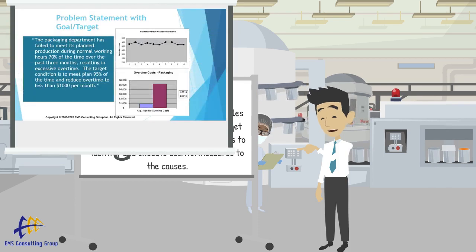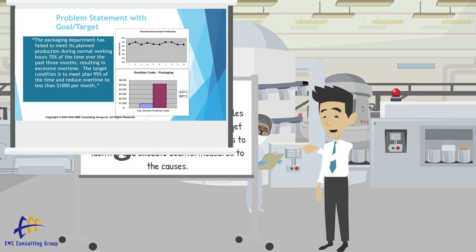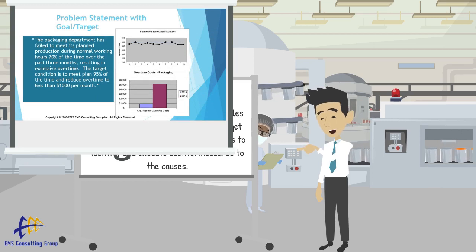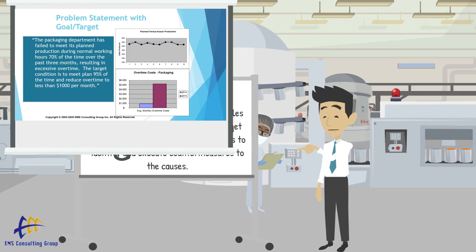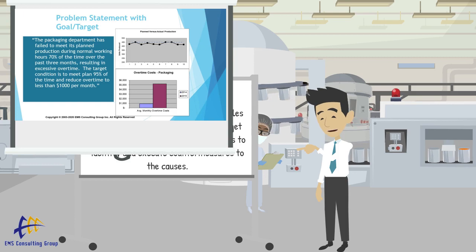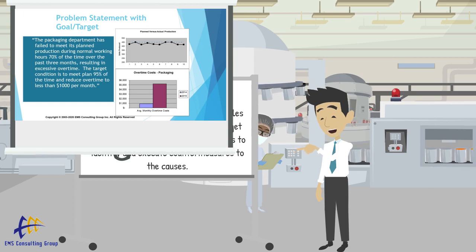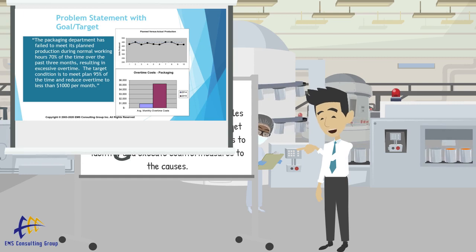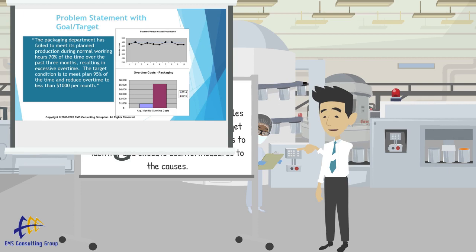Let's look at a problem statement. The packaging department has failed to meet its planned production during normal working hours 70% of the time over the past three months, resulting in excessive overtime. The target condition is to meet the plan 95% of the time and reduce overtime to less than $1,000 per month.